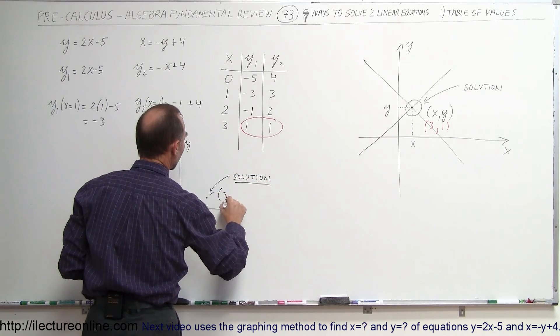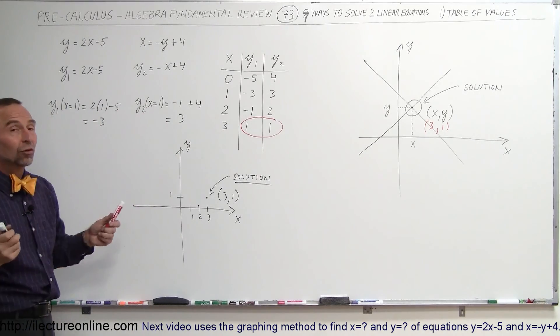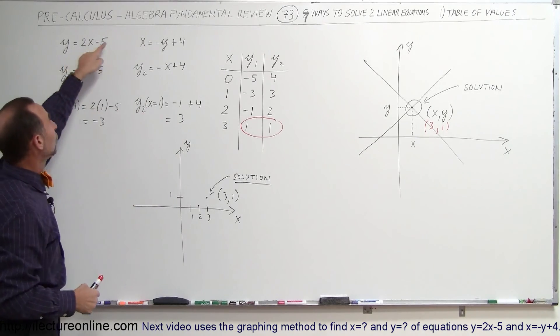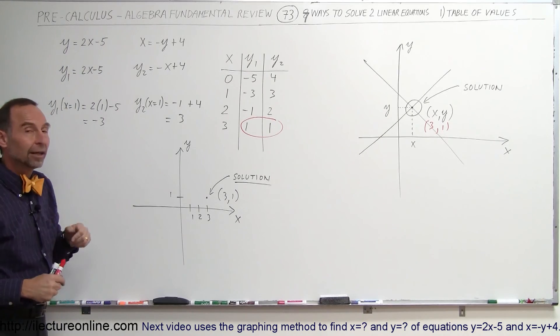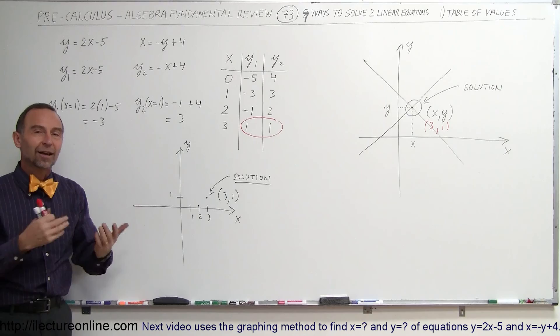So the solution is 3, 1, and that's the solution to this particular problem. What's the solution? It's the point where the two equations cross one another, and I want to find the x and y values, and that's how we do it, using a table of values.